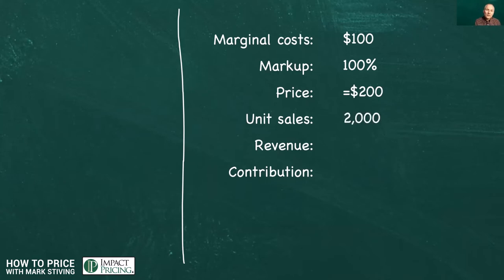Turns out that when we charge $200, we sell 2,000 units. Our revenue then is $400,000. This is pretty nice. What's our contribution margin? Well, since we had 100% markup, our contribution margin is half of that. So we're now making $200,000 in profit, contribution margin.